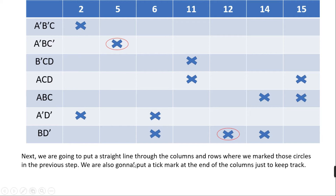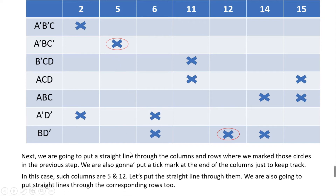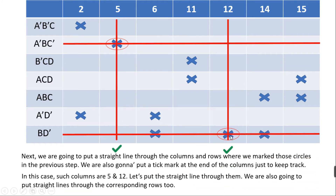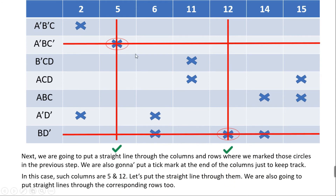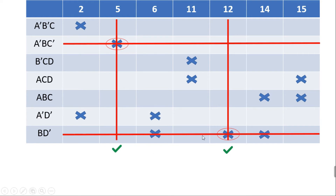Next, we draw a straight line through both the column and row of each circled X — cancelling them out both column-wise and row-wise. We also place a tick mark under those columns to track whether they've been cancelled. Our final target is to cancel all columns.